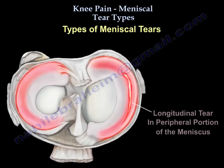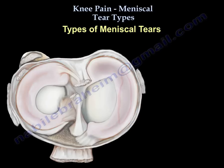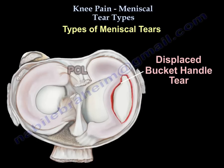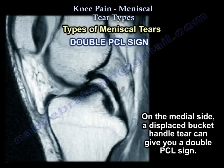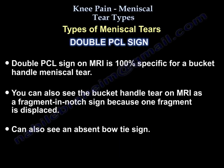So you have the complete longitudinal, peripheral, vertical tear, then the bucket handle, then the displaced bucket handle. On the medial side, that can give you the double PCL sign. The double PCL sign on MRI is 100% specific for bucket handle meniscal tear. You can also see it on MRI as a fragment-on-the-notch sign, or as an absent bow tie sign.